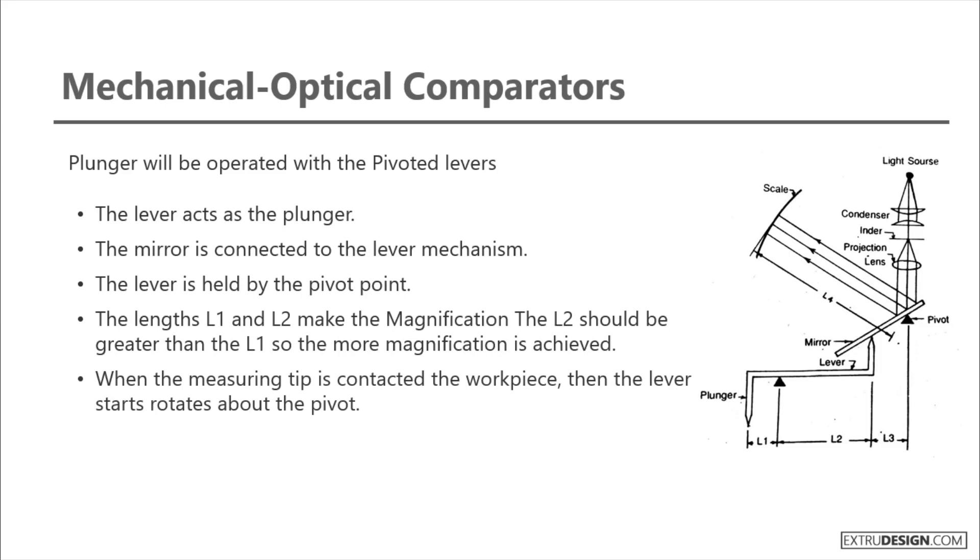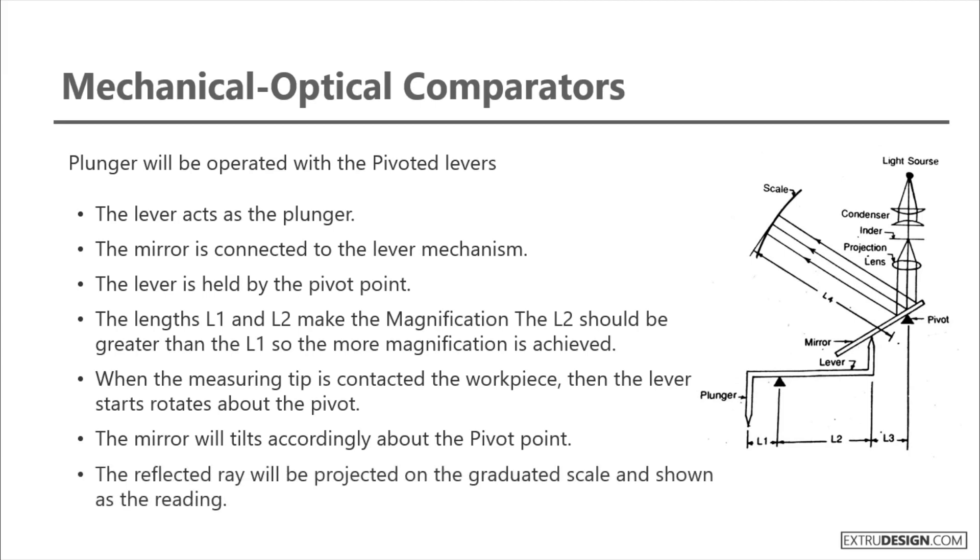When the measuring tip contacts the workpiece, then the lever starts to rotate about the pivot. The mirror will tilt accordingly about the pivot point. The reflected ray will be projected on the graduated scale and shown as the reading. This is how it works.